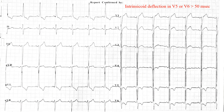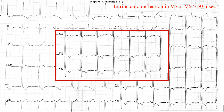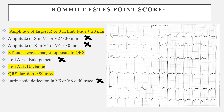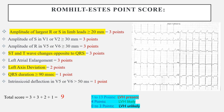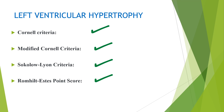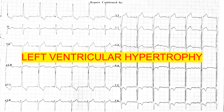The final parameter is intrinsic deflection in lead V5 or V6, which should be more than 50 milliseconds. Applying this threshold, the deflection was a fairly sharp, rapid deflection and was not more than 50 milliseconds, so this criteria was not met. Combining all the parameters that were fulfilled, this patient received a Romhild score of 9, which clearly confirms that the criteria for left ventricular hypertrophy is being met. All four criteria are now fulfilled, confirming this patient has ECG findings consistent with left ventricular hypertrophy.